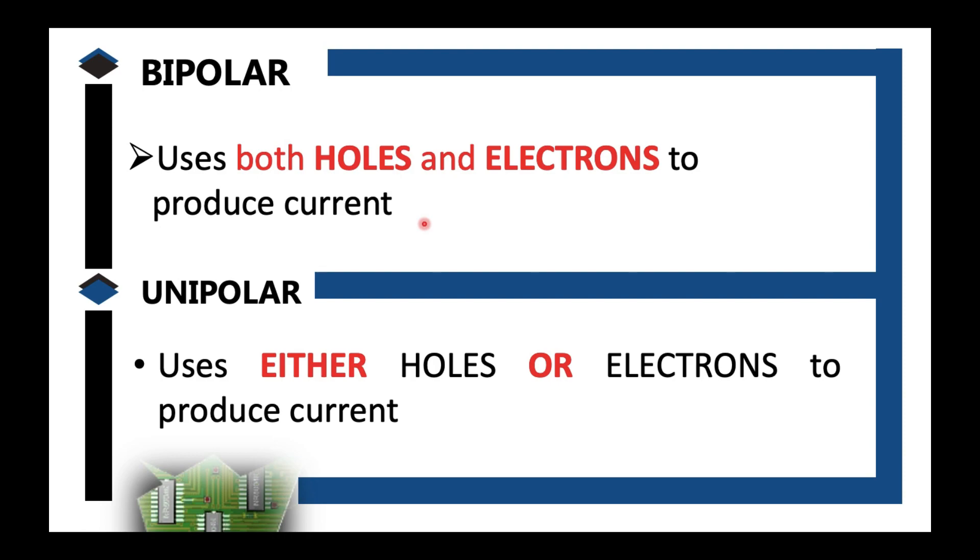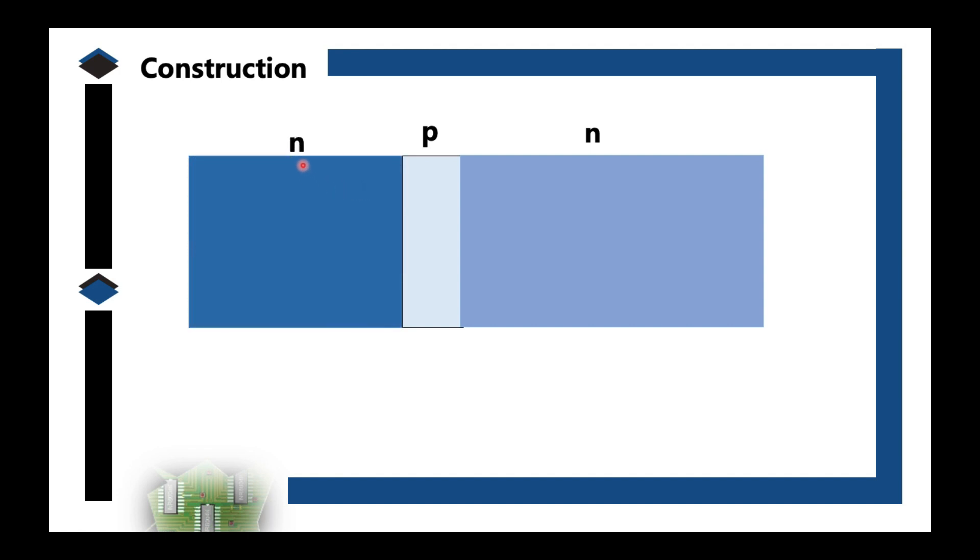Next thing, bipolar junction transistor. We already defined why bipolar. This time let us define why junction. Junction is due to the fact in our construction. So a diode is formed by two semiconductor layers: you have the P-type and the N-type, and you have here one layer, right? One layer.